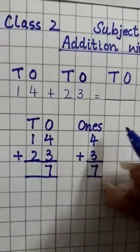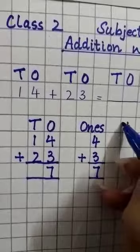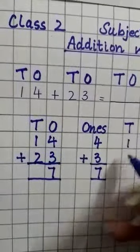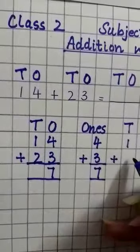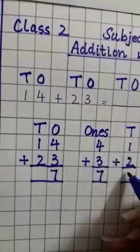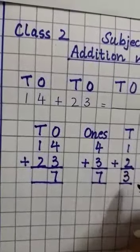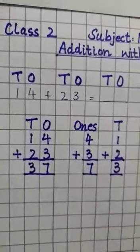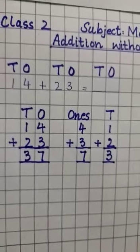Next, second step: leave one block, separate the tens. This is tens house: 1 plus 2. One plus two is three. Write this three under tens house like this. Now what is the answer?